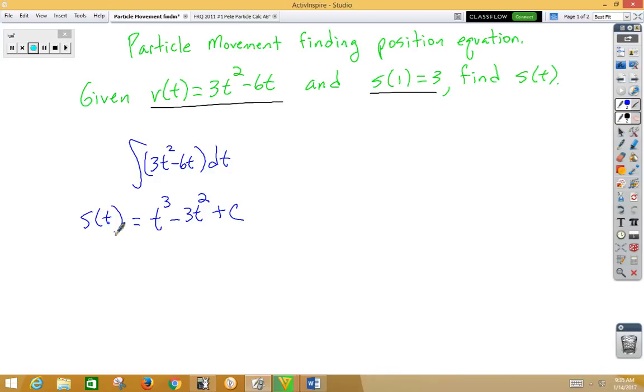But now notice they have provided for us an initial position so that we can solve for c. So if we plug in a 1 for t, and we know that the answer when we plug in a 1 is 3. So now we get 3 is equal to 1 minus 3 plus c. So 3 is negative 2 plus c, giving c being 5.